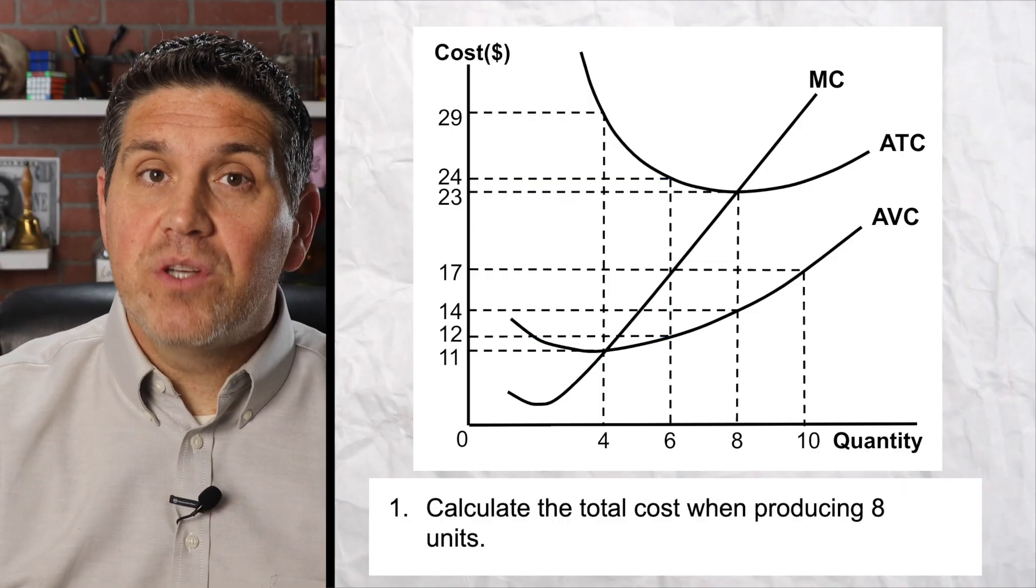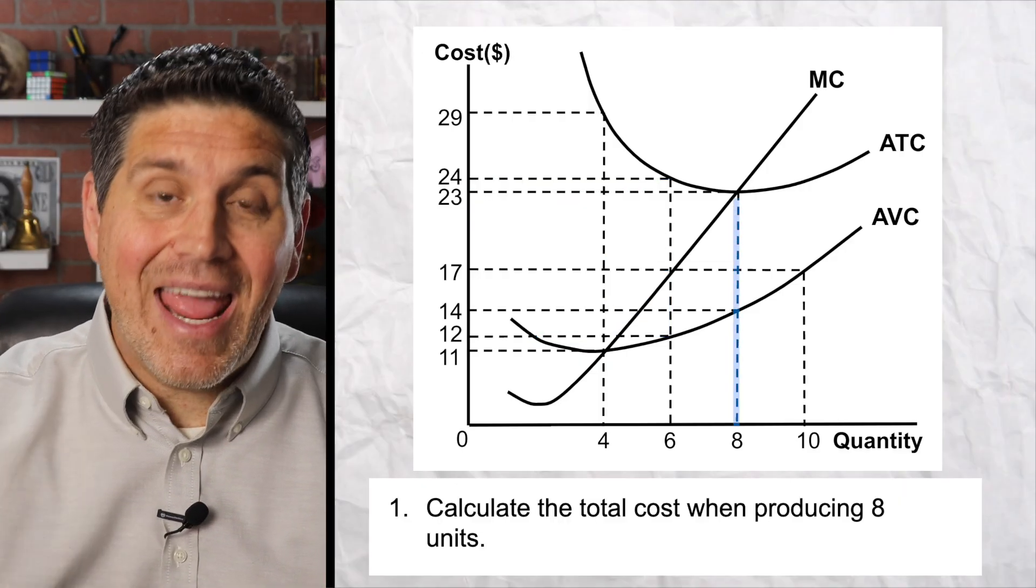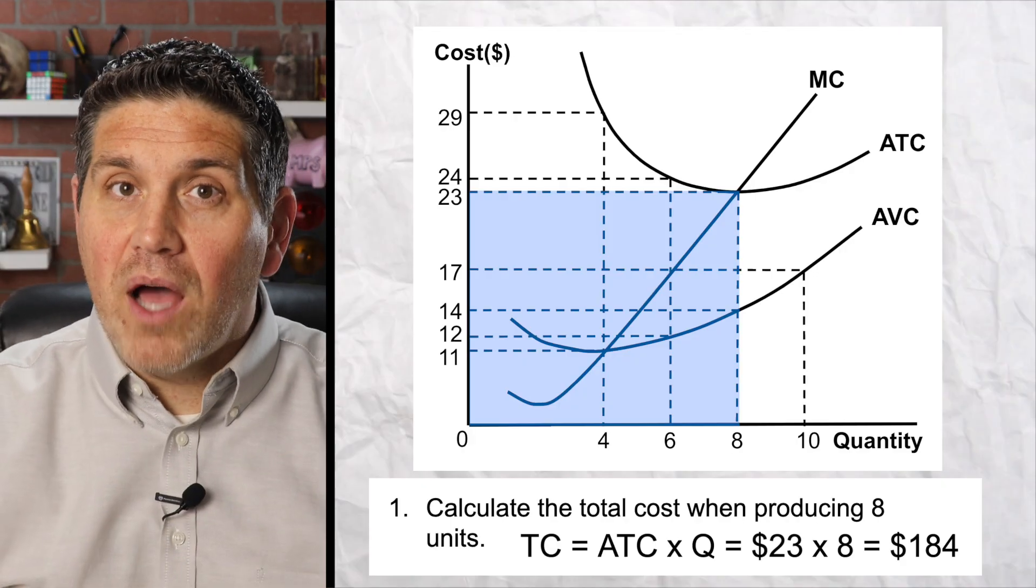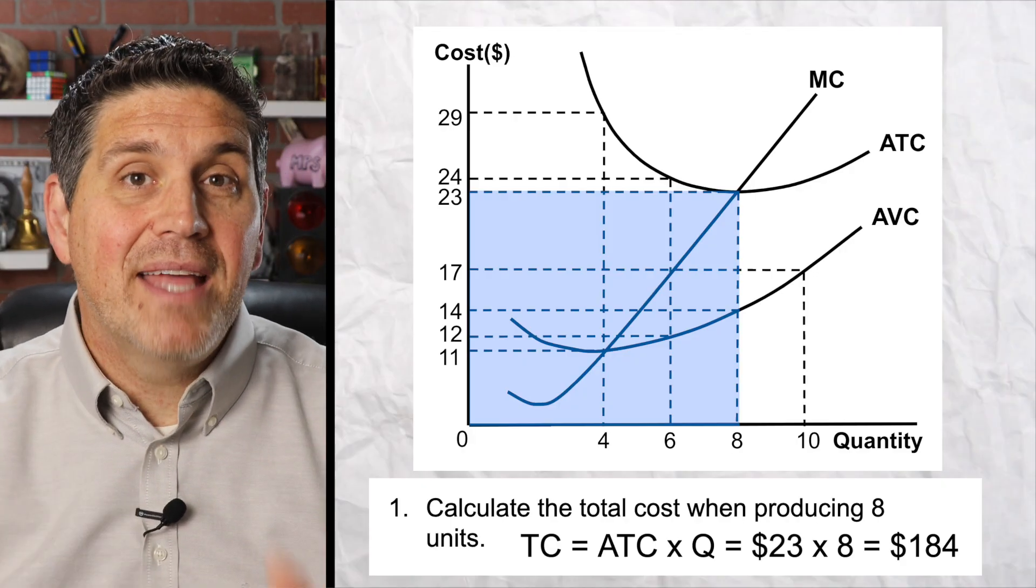For question number one, all you have to do is go up to the average total cost at eight units, so 23 times eight. That's $184 of total cost. And more importantly, you should be able to see the box. It's right there.